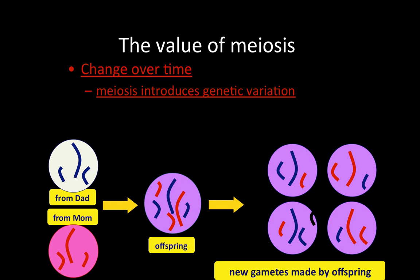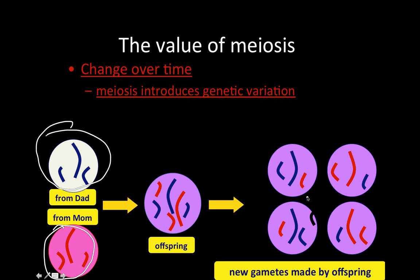Another value of meiosis concerns change over time: meiosis introduces genetic variation in the population. Take a peek at the chromosomes in blue from dad's gamete and the chromosomes in red from mom's gamete. When the offspring goes through meiosis, look at all the potential gametes it can make — none have the exact same chromosomes as the gametes mom or dad made.